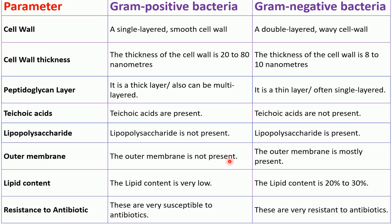The outer membrane is not present in gram-positive bacteria, whereas in gram-negative bacteria the outer membrane is mostly present. The lipid content is very low in gram-positive bacteria, whereas the lipid content is 20 to 30 percent in gram-negative bacteria.